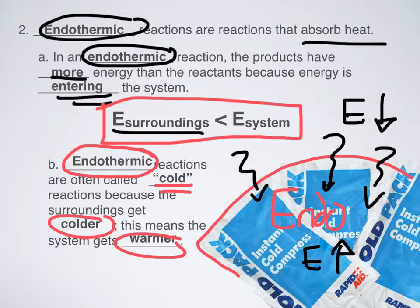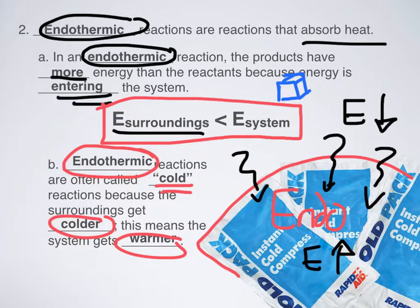Endothermic reactions are often called cold reactions because the surroundings get colder, which means the system is getting warmer. Endothermic processes are pretty common in our lives. For example, let's think about melting a chunk of ice. In order to turn a chunk of ice into liquid water, you have to apply heat — that's an endothermic process. The ice cube absorbs heat, and if it absorbs heat, it turns into liquid water. So melting something is an example of an endothermic process.